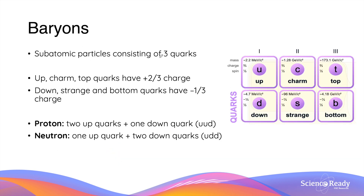Baryons are subatomic particles made of three quarks. There are six types of quarks, similar to leptons. Up and down quarks form the first generation; charm and strange form the second; top and bottom form the third. Second and third generation quarks are much more unstable and rarer than first-generation quarks. Up, charm, and top quarks each have a charge of positive two-thirds, while down, strange, and bottom quarks each have a charge of minus one-third.